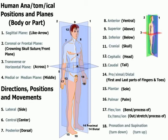Number three is the transverse plane, also known as the horizontal plane. 'Trans' means across, and the horizon at a distance goes from right to left. So this plane divides the body into an upper portion and a lower portion.